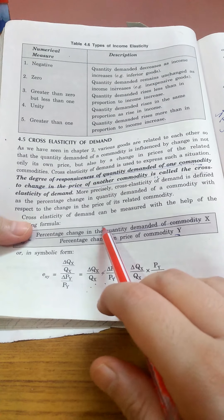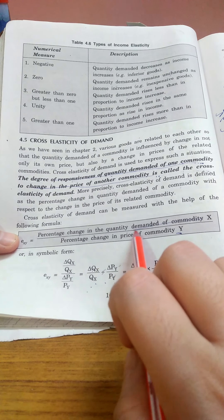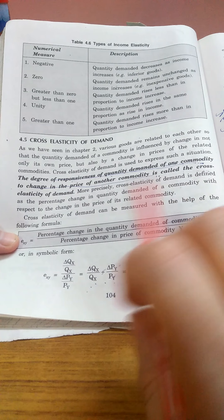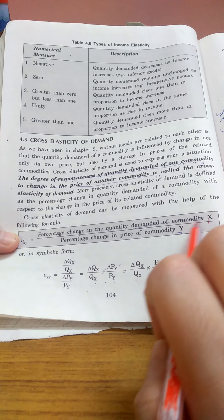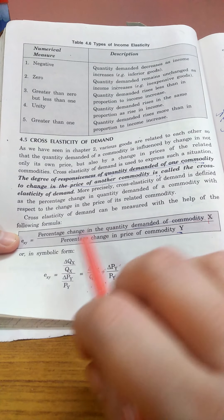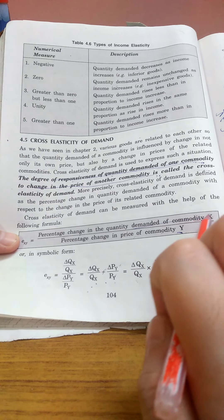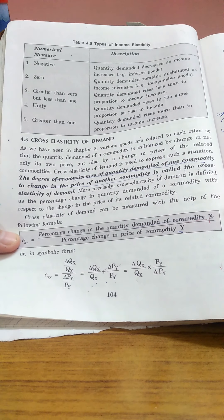The formula is: percentage change in quantity demanded of commodity X divided by percentage change in price of commodity Y. These are two commodities, X and Y.